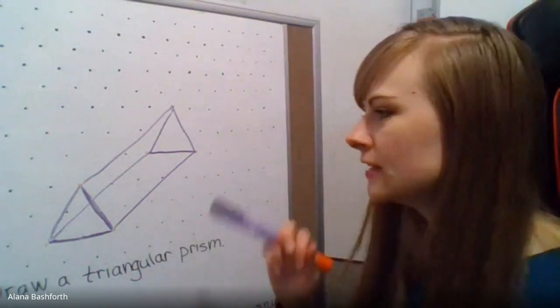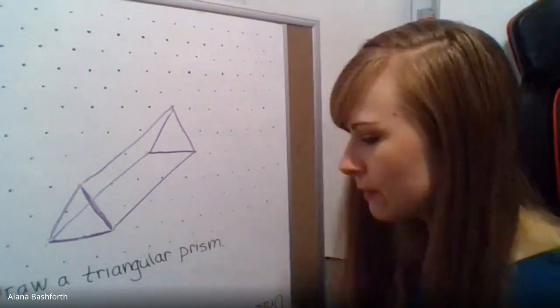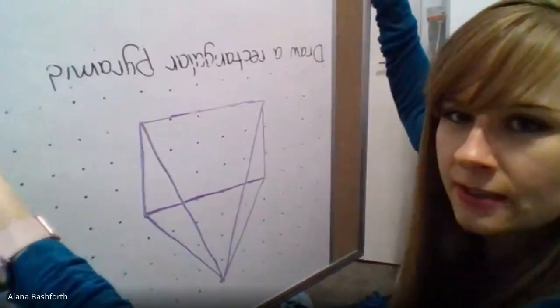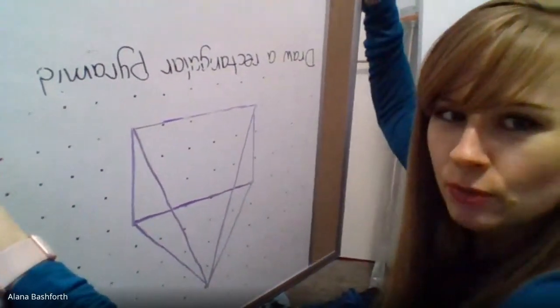There we go. There is a triangular prism on triangular dot paper and a rectangular pyramid on square dot paper.